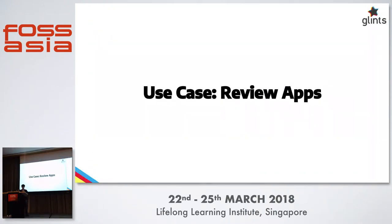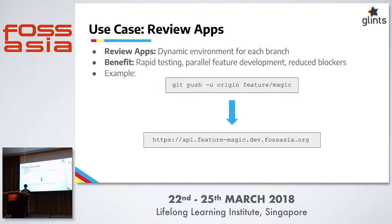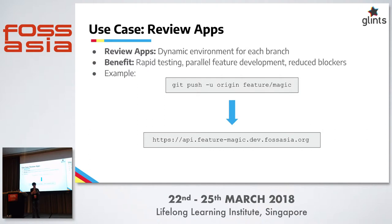So here's the meat of the presentation: how we use Rancher for review apps. Review apps are basically a CI/CD procedure where you set up dynamic environments for every branch in your version control repository. The benefit is that you can enable rapid testing and allow different teams to work on features in parallel without disrupting the staging or pre-production environment. This reduces blockers and increases developer productivity. For example, I can push a branch called feature/magic and get a URL like api.featuremagic.dev.forcesia.org.